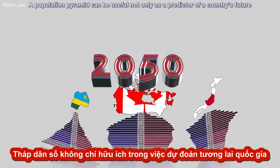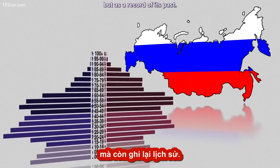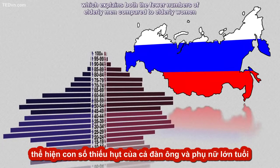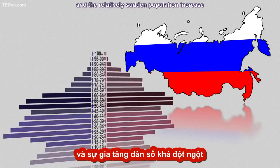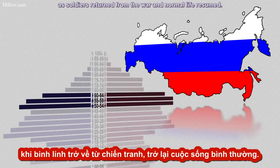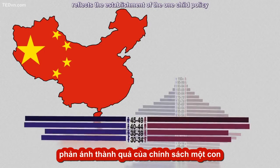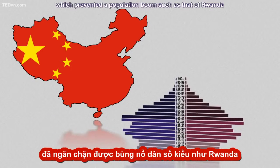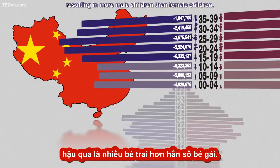A population pyramid can be useful not only as a predictor of a country's future, but as a record of its past. Russia's population pyramid still bears the scars of World War II, which explains both the fewer numbers of elderly men compared to elderly women, and the relatively sudden population increase as soldiers returned from the war and normal life resumed. China's population pyramid reflects the establishment of the One Child Policy 35 years before, which prevented a population boom such as that of Rwanda, but also led to sex-selective abortions, resulting in more male children than female children.